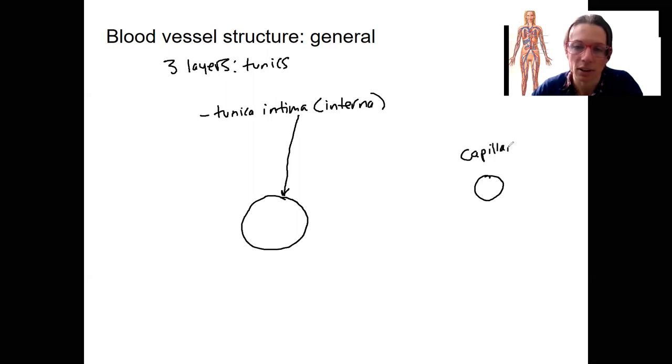This is our capillary. This is going to be everything else. Veins and arteries and arterioles and venules are going to have different compositions of these different layers, but still have all three layers in different compositions.